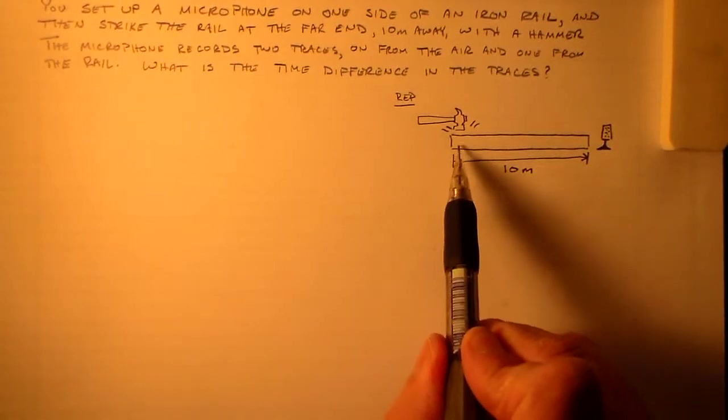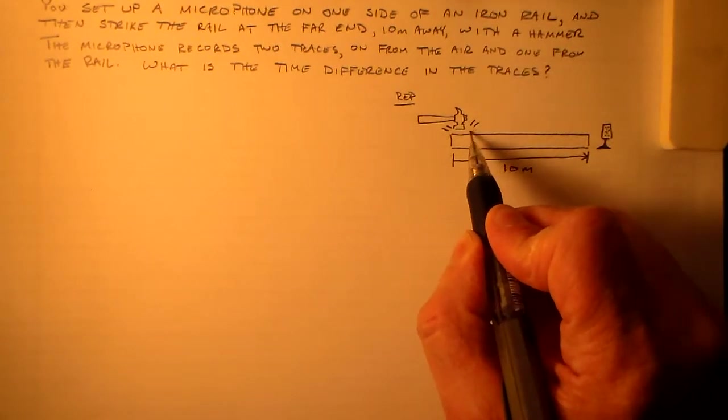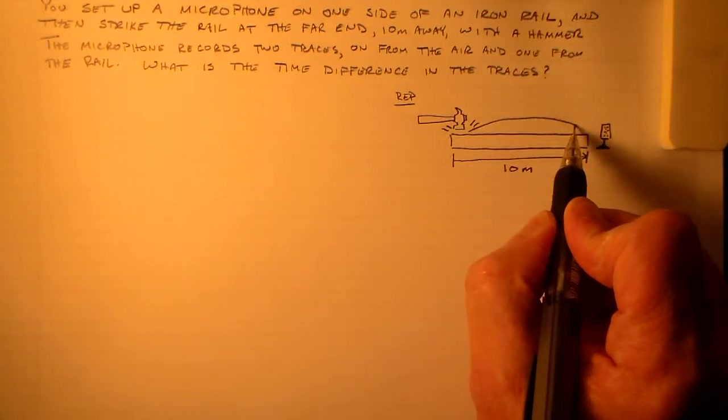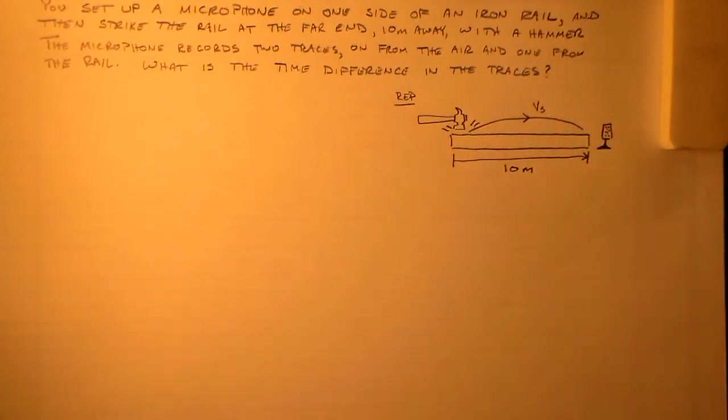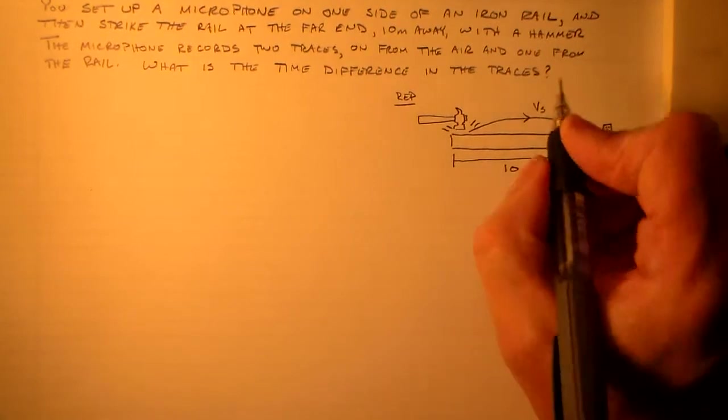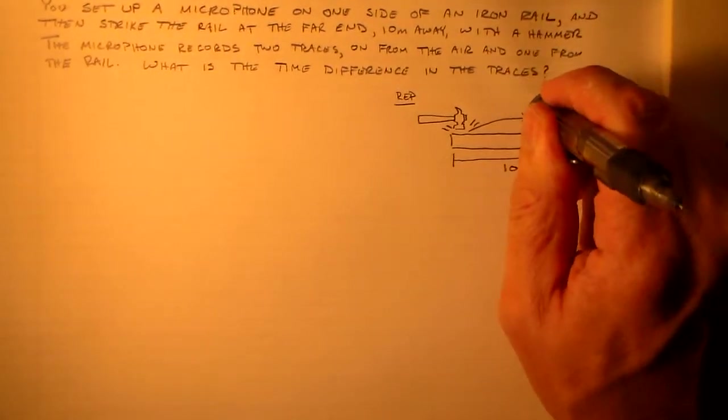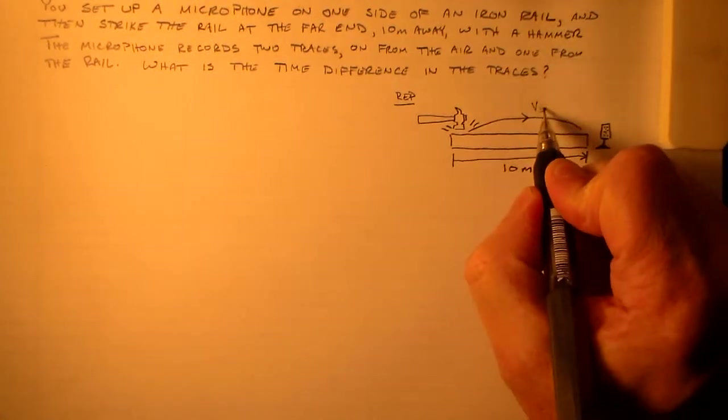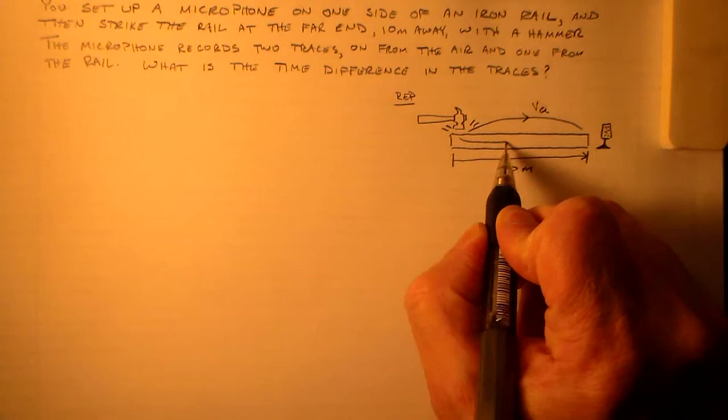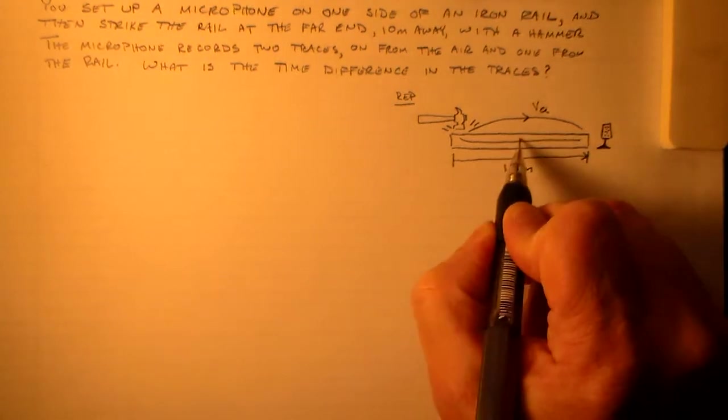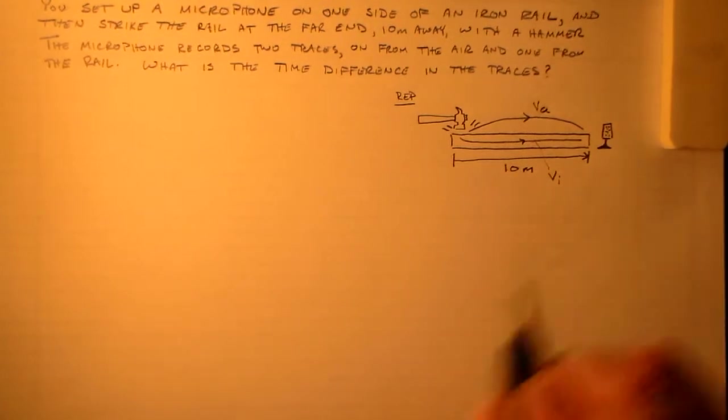And when the hammer hits here, the sound is going to travel in two different paths, right? One is going to go through the air here, the one that you hear. It's going to go at the speed of sound in air, so let's call that VA for air. But there will also be a sound wave that propagates through the iron here, so let's call that VI.